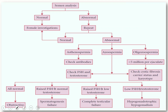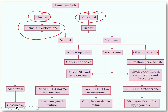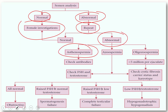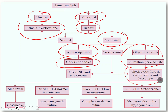If the semen analysis report is completely normal, we will start female investigations. If the report is abnormal, we repeat semen analysis after 3 months as recommended by NICE guidelines. On repeat testing, if we find asthenospermia — less than 32% sperm motility — we check anti-sperm antibody levels. If the sperm count is less than 5 million per ejaculate, indicating oligozoospermia, we do karyotyping to diagnose conditions like cystic fibrosis. If sperms are almost absent — azoospermia — we proceed to hormone testing.